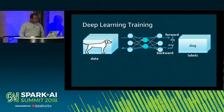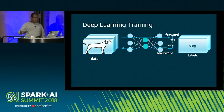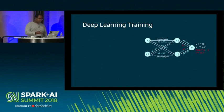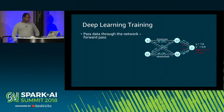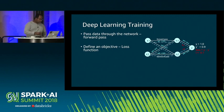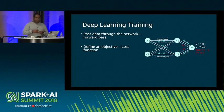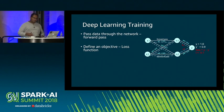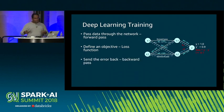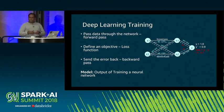Deep learning has two phases. The first is training, where you develop a model and feed lots of data to it, checking the output against what you expected. You pass data through the network — called forward propagation — and then have an objective function. You verify the output against the ground truth, calculate loss, pass it back if not as expected, and take gradients on each of the weights to update them — this is backward propagation. You do this many, many times until you achieve your objective and get a model.